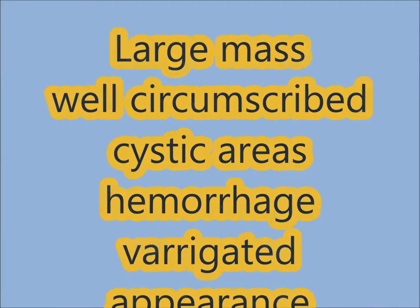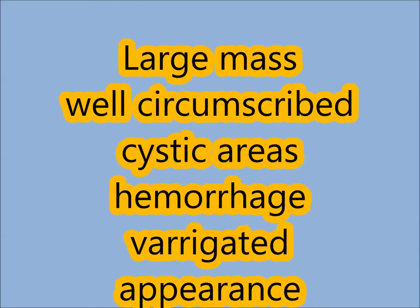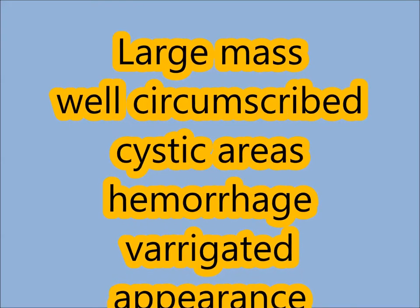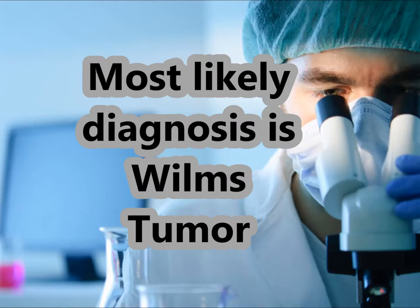Because of all this, there is a variegated appearance — different areas give a different appearance. The important points are: a child less than five years of age, abdominal mass arising from the kidney, solitary, spherical, large, well circumscribed, and variegated appearance. Combining all this information, the most likely diagnosis is Wilms tumor.